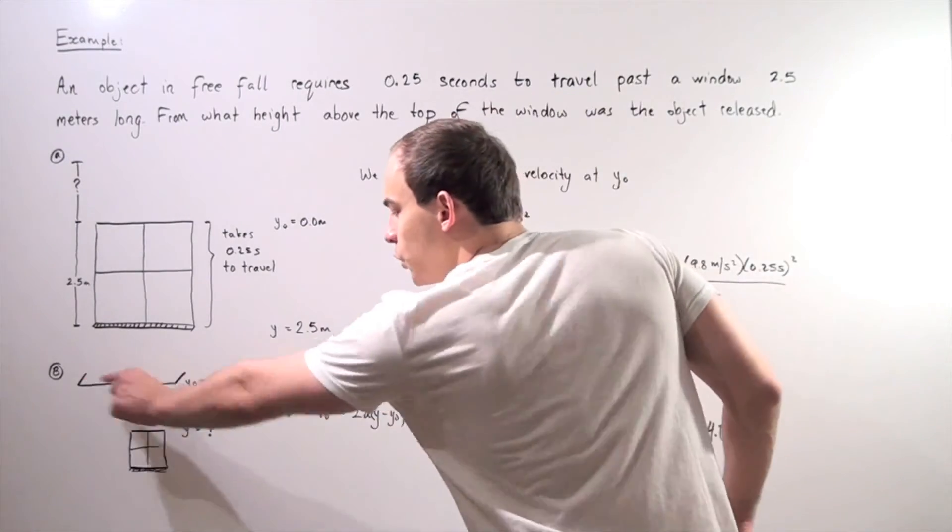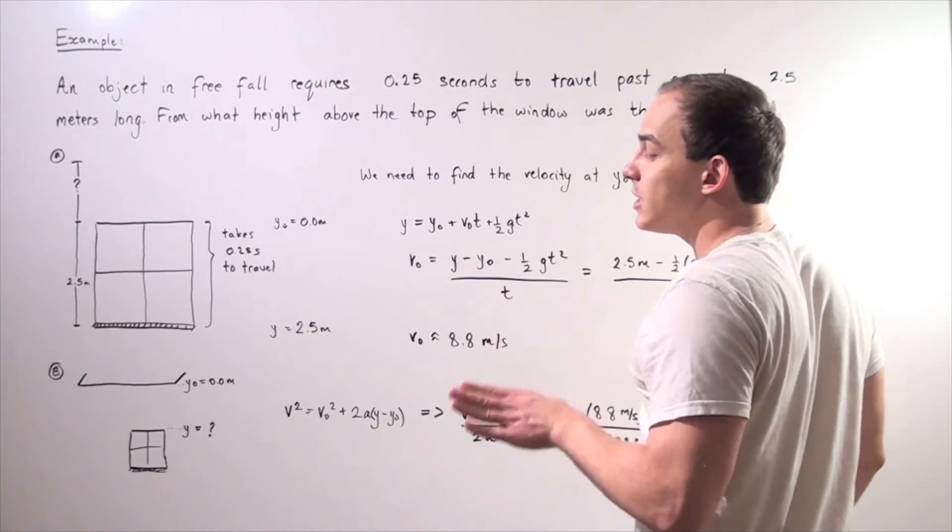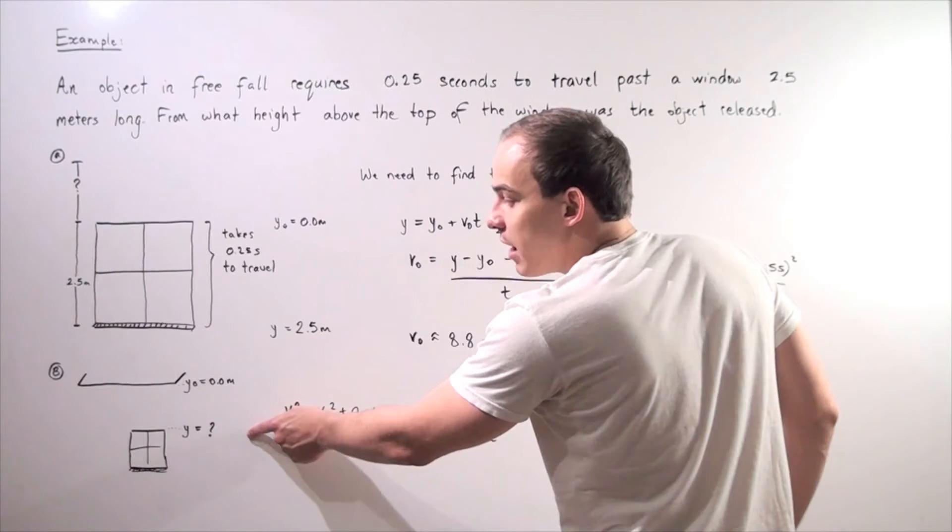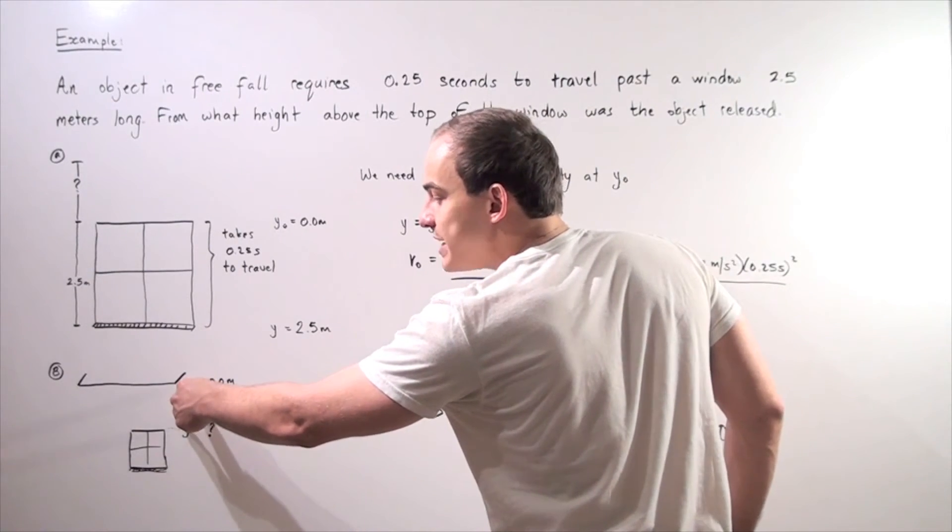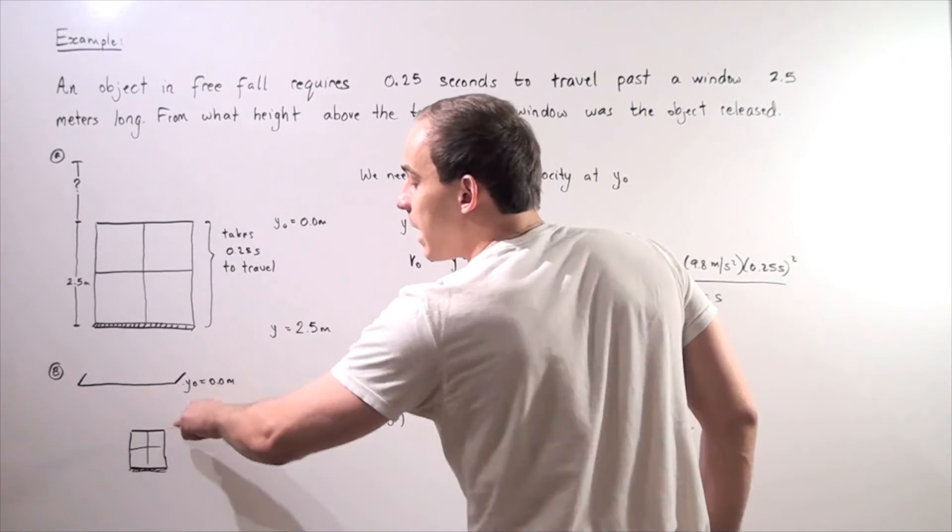Now let's set the roof to be our y naught, 0.0 meters, and let's set our final location, position, to be what we want to find. So we want to find this displacement from the top of the roof to the top of the window.